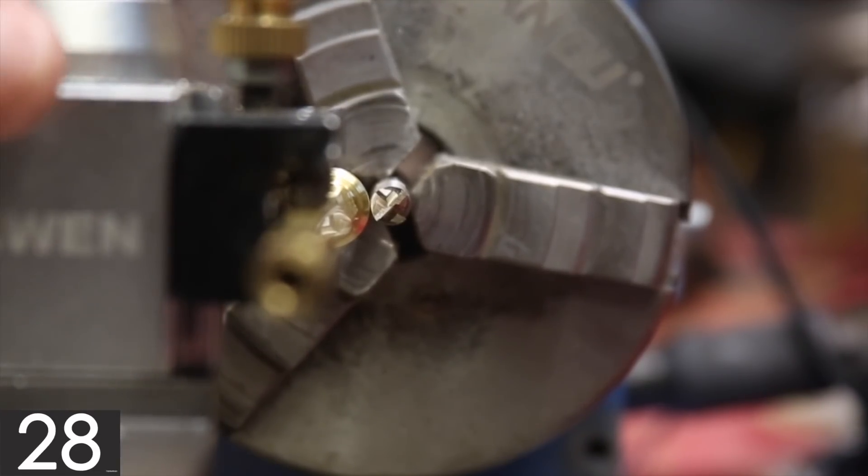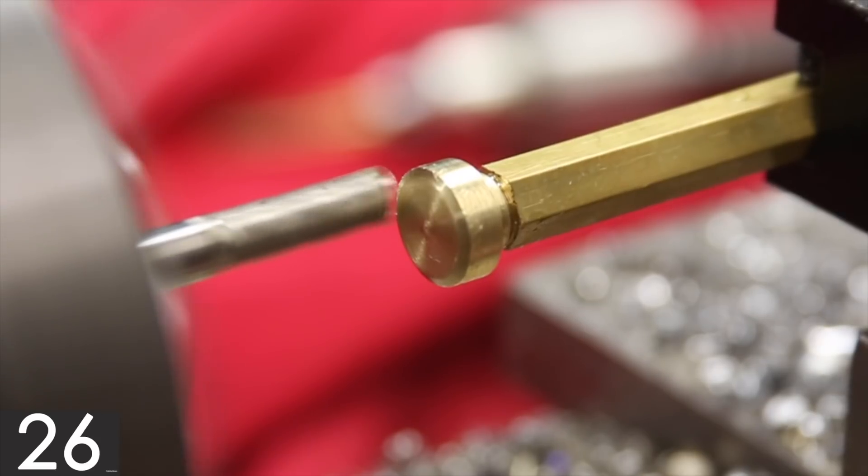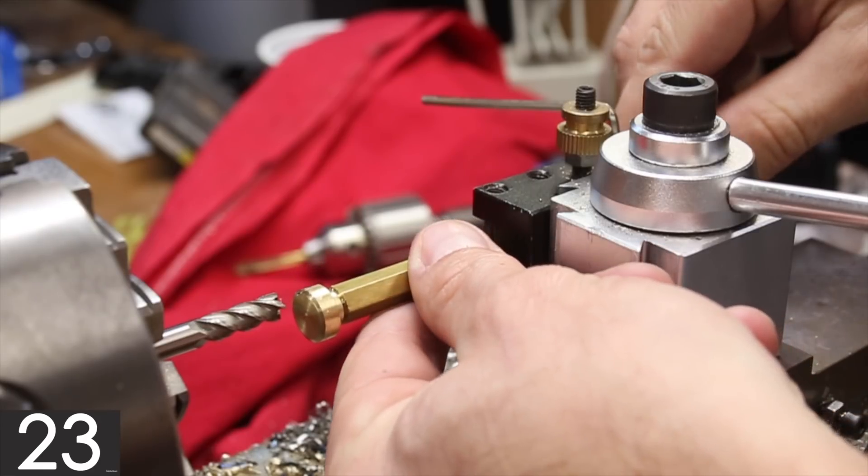Once the part is adjusted and the initial cut is set to the proper depth, simply rotate the jig in the tool holder and repeat the cutting process.